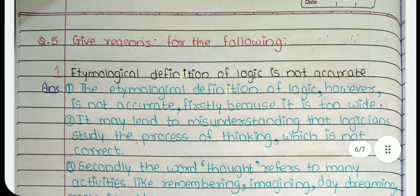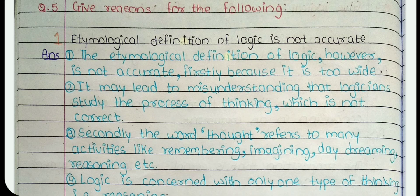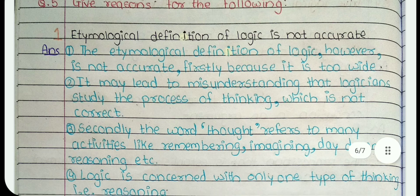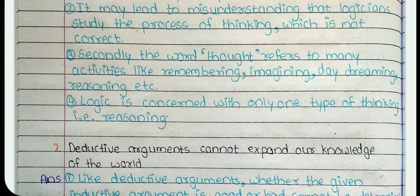Question 5: Give reasons for the following. 1. Etymological definition of logic is not accurate. It may lead to misunderstanding that logicians study the process of thinking, which is not correct. Secondly, the word 'thought' refers to many activities like remembering, imagining, daydreaming, reasoning, etc. Logic is concerned with only one type of thinking, i.e. reasoning.